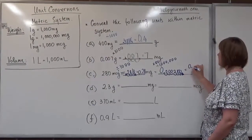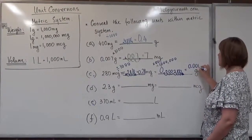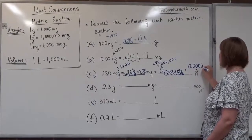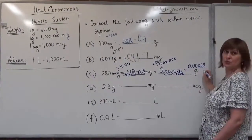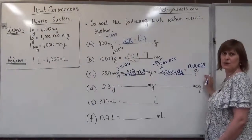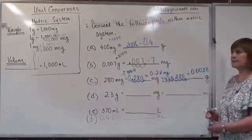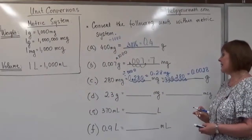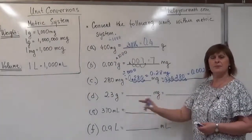Since we can drop the last trailing zero, the final answer is 0.00028 grams, which is 28 hundred-thousandths of a gram.